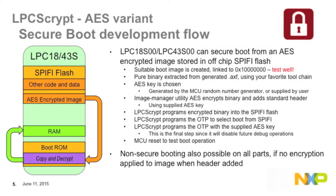Once a binary has been extracted, it can then be encrypted with the chosen AES key by the supplied image manager utility. LPCScript can then be used to program the encrypted binary into SPI flash, program the OTP bits to force boots from SPI — overriding the boot pin settings of the MCU — and program the AES key into OTP memory. This final step will disable further debug once a reboot has occurred.